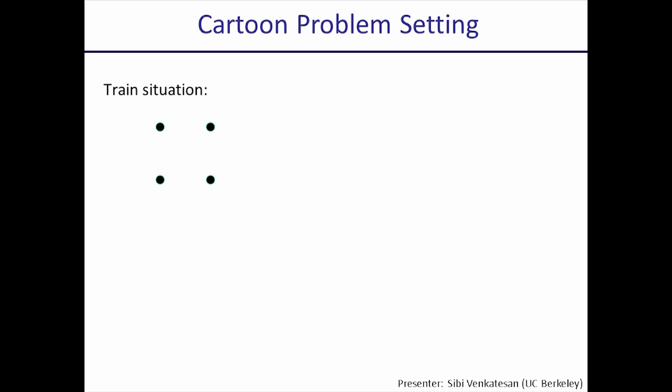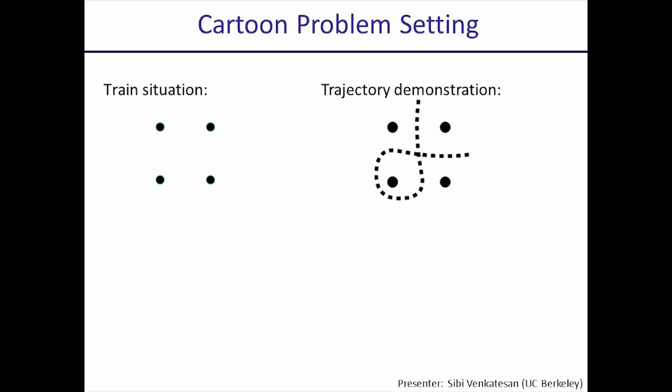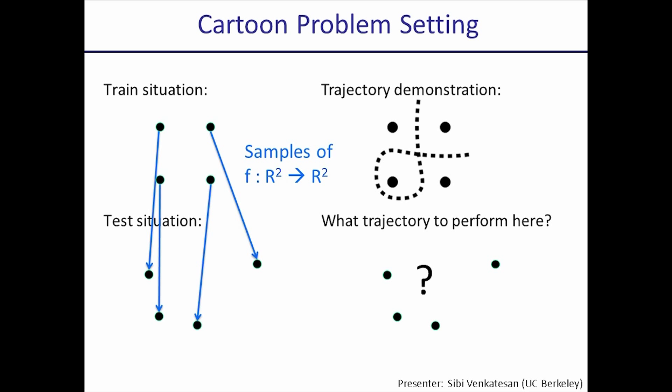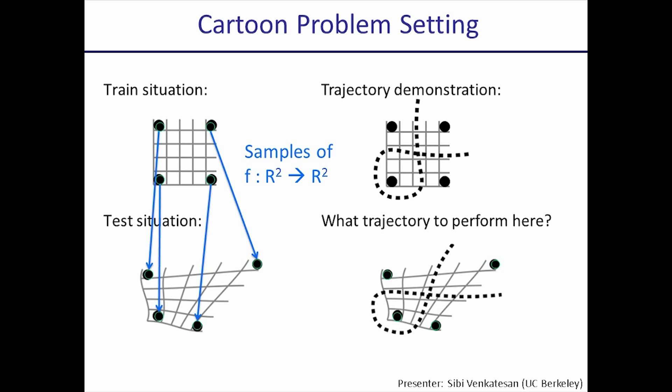Let's look at a cartoon example to make this clear. This is a point cloud of our training situation with four points, and this is our demonstrated trajectory adapted to this particular point cloud. Now the robot is presented with a new point cloud with the points moved around a bit. Here we use a technique known as non-rigid registration, which has been explored especially in medical imaging, to register the points from the training situation to the test situation. The novelty of our scheme is that we treat these registered pairs of points as samples of a function mapping from R3 to R3, and we machine-learn this function to warp the trajectory from our demonstration to the new situation.